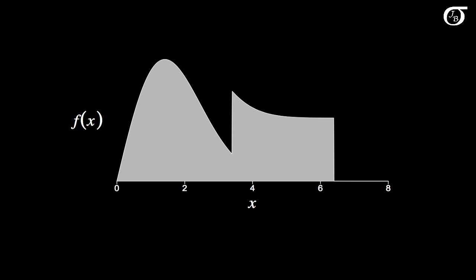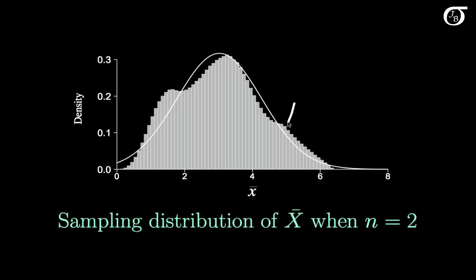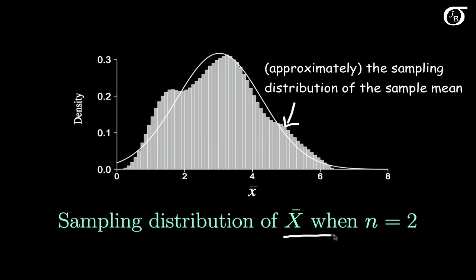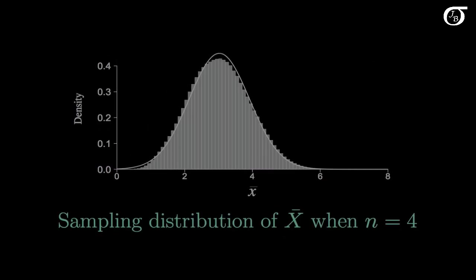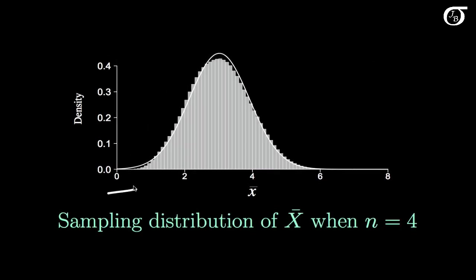Let's do another simulation for a different distribution — this one's a bit of a weird mixture type of distribution. The same scenario as before: I'm going to randomly and independently draw two observations from this distribution, calculate the sample mean, draw another two, calculate the mean, and do that a million times and plot a histogram. Note that in this series of plots, I'm keeping the scaling on the x-axis the same and letting the y-axis scaling change from plot to plot.